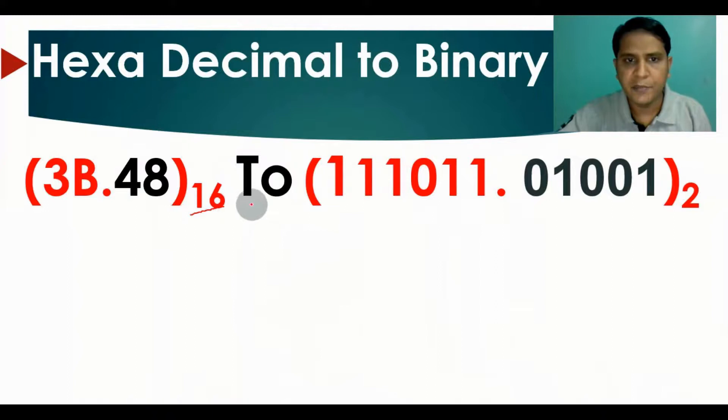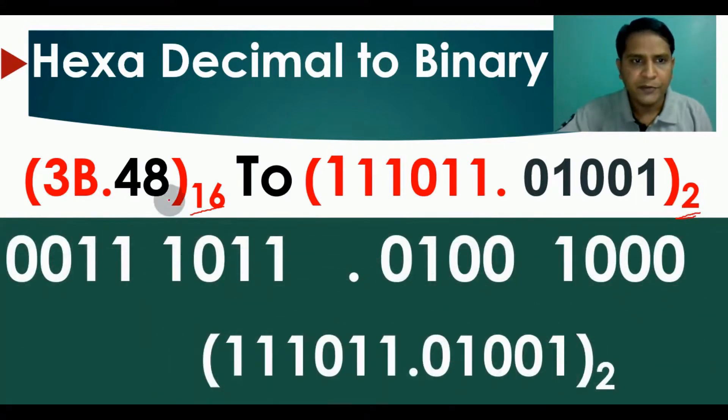We need to convert this hexadecimal number into a binary number with base 2. Let's see how we can convert this. This is the integer part, and this is the fractional part.